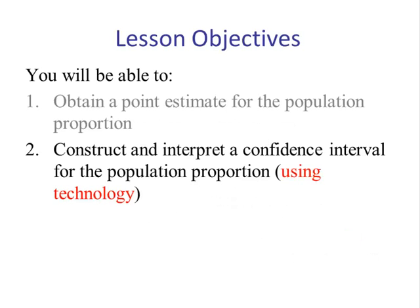The learning objective is to construct and interpret a confidence interval for the population proportion using technology. We will use Minitab and StatCrunch.